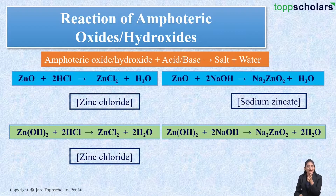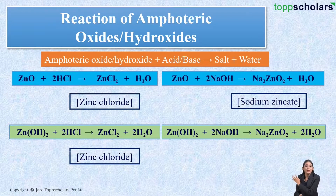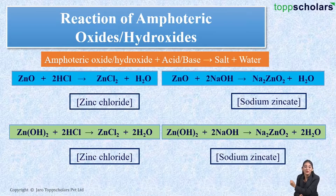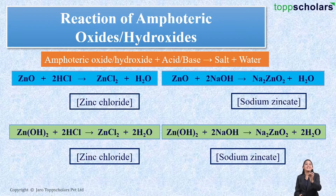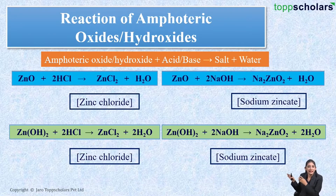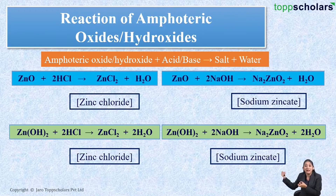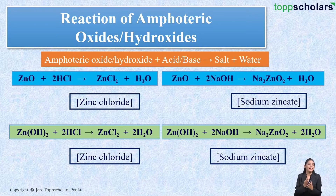Similarly, when zinc hydroxide reacts with a base — sodium hydroxide — it results in the formation of salt, that is sodium zincate, along with water. So zinc hydroxide reacts with a base and therefore behaves as an acid. In these two examples, zinc hydroxide when it reacts with an acid behaves as a base, and when it reacts with a base it behaves as an acid.